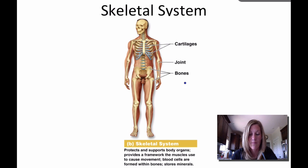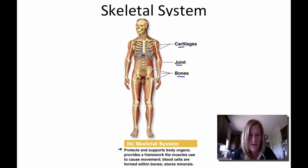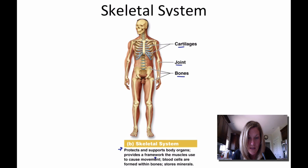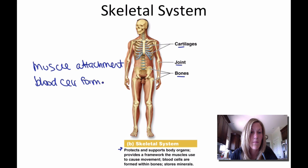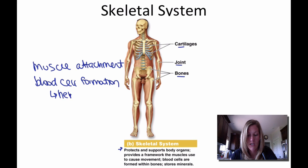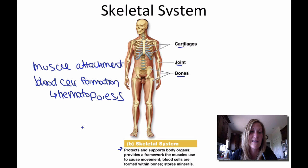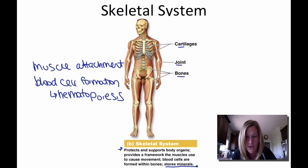The skeletal system is made up of cartilage, joints, and bones. It protects and supports body organs, and provides a site for muscle attachment. In addition, it's a site of blood cell formation — also called hematopoiesis, spelled H-E-M-A-T-O-P-O-I-E-S-I-S. The skeletal system also stores minerals.